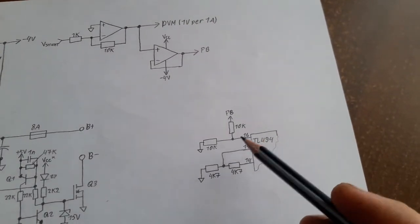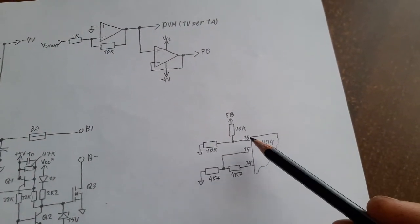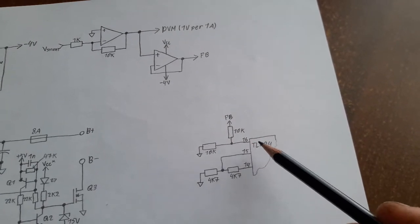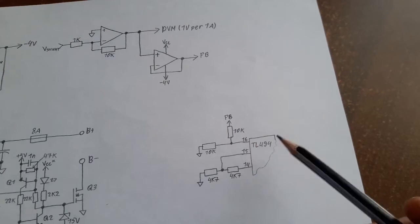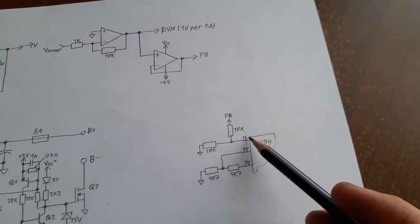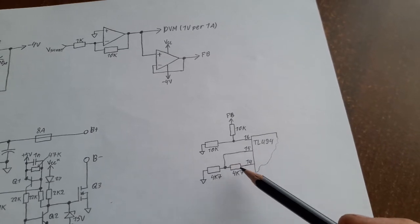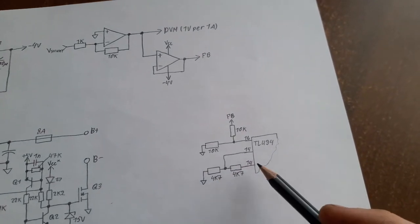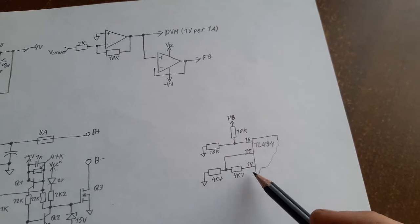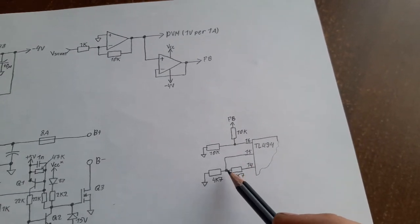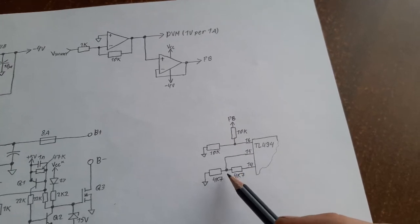Pin 16 and pin 15 are inputs of the error amplifier. 16 is non-inverting, 15 is inverting. Inverting gets connected to some voltage reference. Pin 14 is a 5 volt built-in reference of the chip. So basically right here I have half that, 2.5 volts.